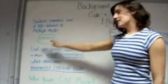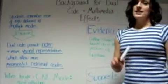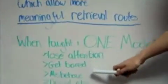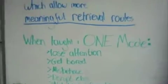This is because dual codes provide richer and more varied representations, which allow more meaningful retrieval routes. When taught in just one mode, such as the teacher just talking to the students, students often lose attention, get bored, misbehave, disrupt the rest of the class, and not take in the information, which is bad.